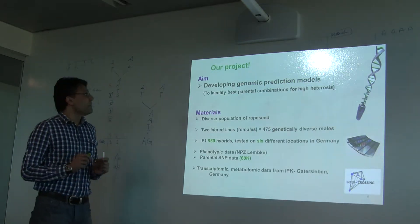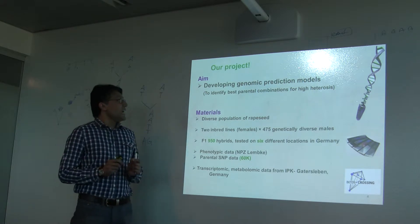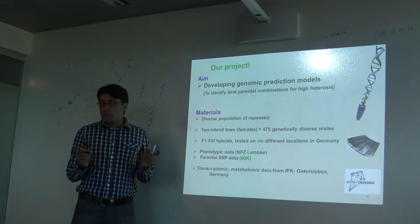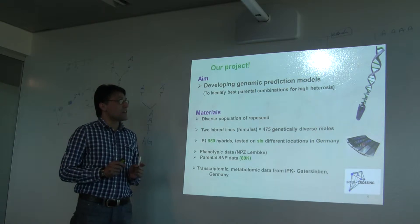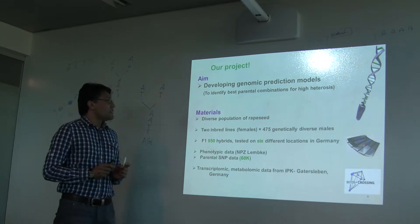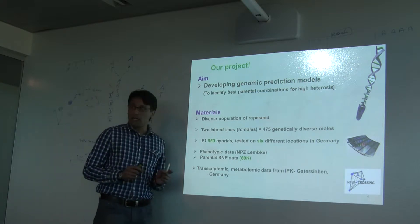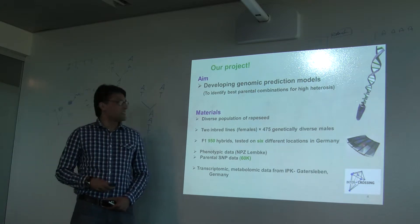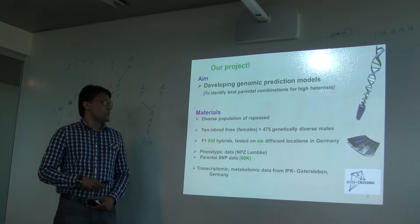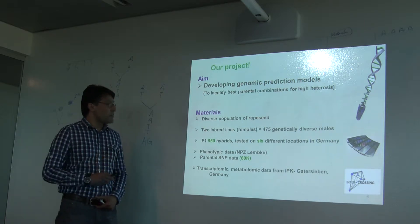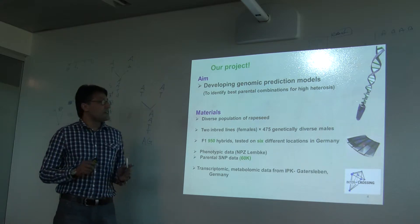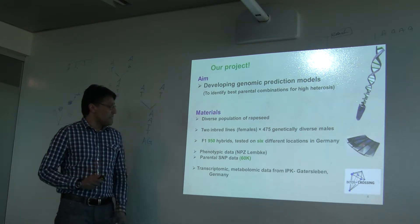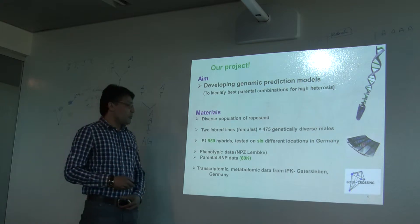Now coming to my actual project, the aim of my project is to develop genomic prediction models simply to identify the best parental combinations for higher heterosis. The material I'm using is a diverse population of canola rapeseed. We have two inbred lines crossed with 475 genetically diverse males, and we have 950 hybrids. These have been tested in different locations already in Germany, and the phenotypic data have been obtained by the company. And now we will use SNP data.